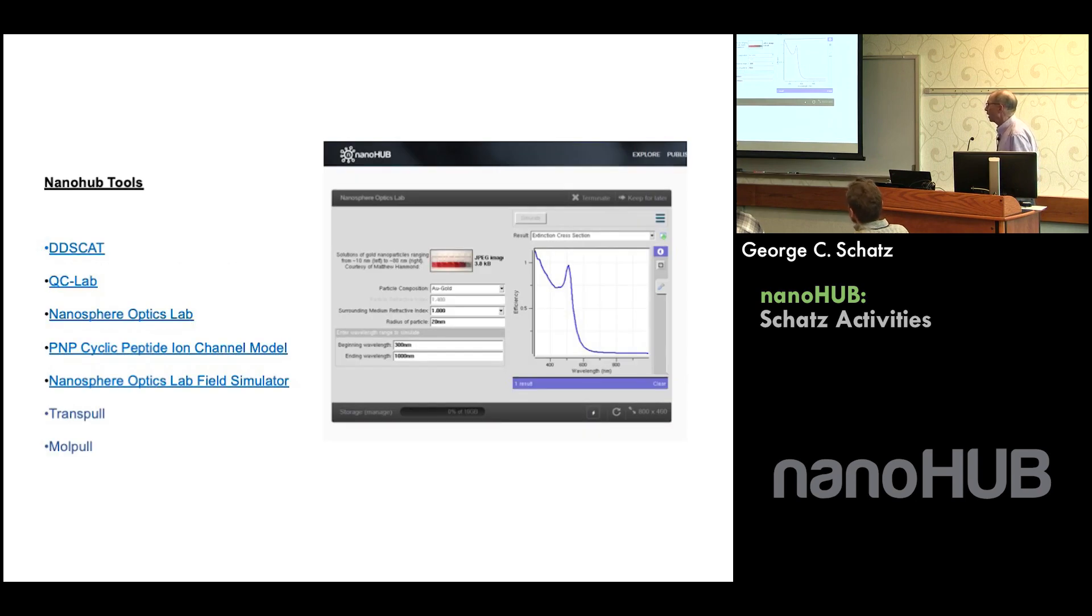All right, so here's some of the nanohub tools that we developed. I'll talk a little bit about one that we did that's called the Nanosphere Optics Lab. And actually over here you can see I got into this last night. I said, let's run it and see what happens. And it's actually quite a simple code. It just does simple MIE theory calculations to calculate the optical spectra of nanoparticles. Particularly gold, silver nanoparticles, things like that.